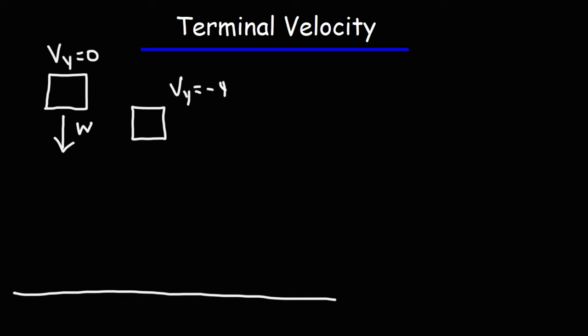The vertical velocity might be negative 4 meters per second after some time t. The weight force is going to be basically the same. But as it begins to fall, it's going to encounter air resistance, or you could call it air drag. Here is the object, and here are some air molecules that are in the way. As this object falls, it's going to push fluid out of its way — in this case, the air molecules.